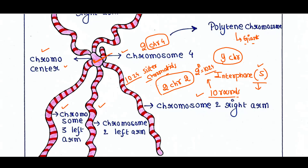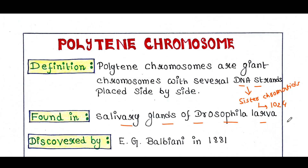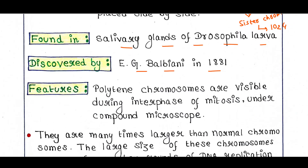Polytene chromosomes are giant chromosomes with several DNA strands — that means sister chromatids placed side by side — 1024 for each chromosome. The polytene chromosome is found in the salivary glands of Drosophila larvae, and it was discovered by E.G. Balbiani in 1881.